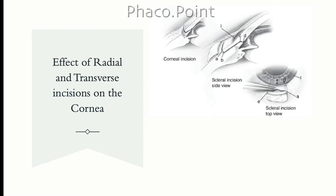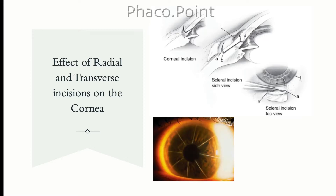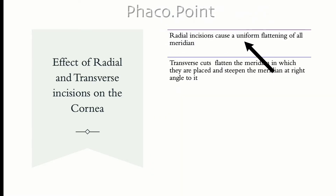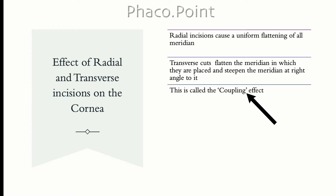At the outset we need to understand that full thickness incisions on the cornea, limbus or sclera, and partial thickness cuts in the form of either radial or transverse keratotomies as well as circumferential limbal relaxing incisions will all produce a flattening effect. While radial incisions produce a uniform flattening of all corneal meridia, transverse or circumferential incisions will produce a flattening on the meridian in which they are placed and a steepening of the meridian 90 degrees away. This phenomenon is called coupling, and its effectivity is expressed as a flattening-to-steepening ratio known as the coupling ratio.